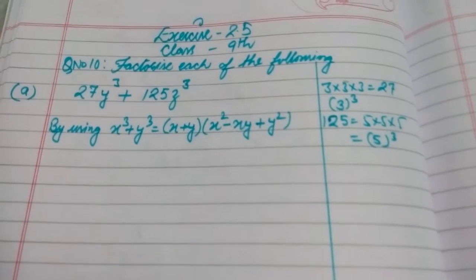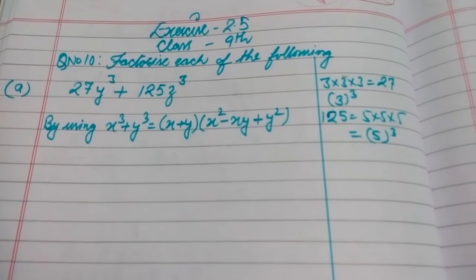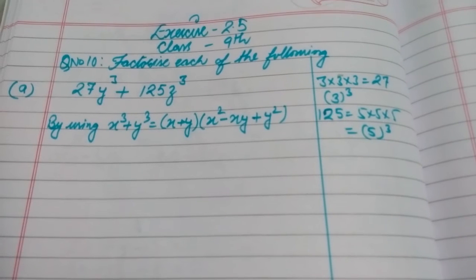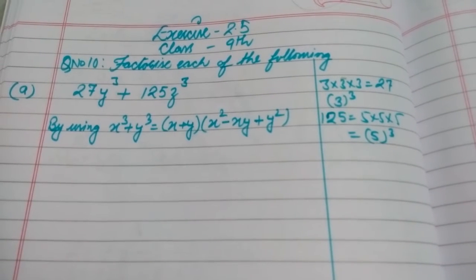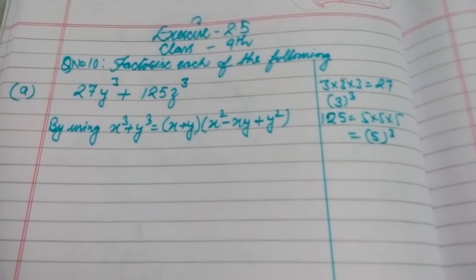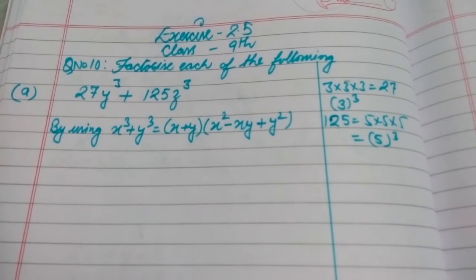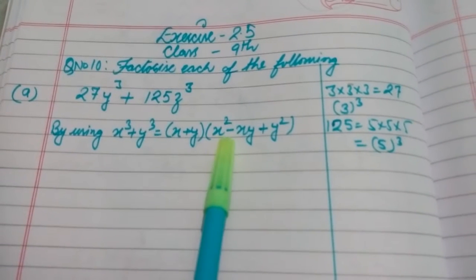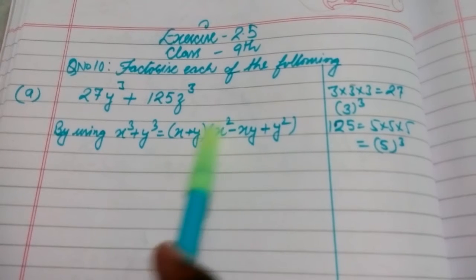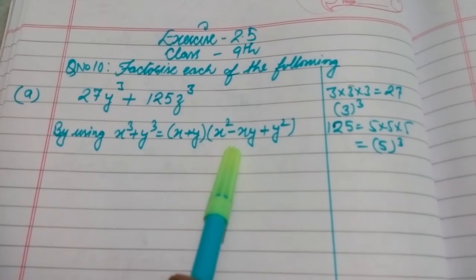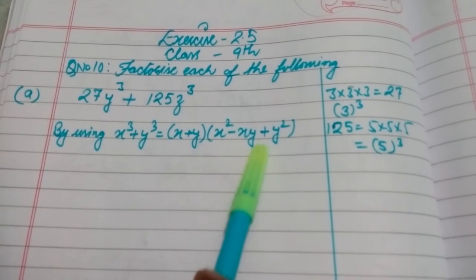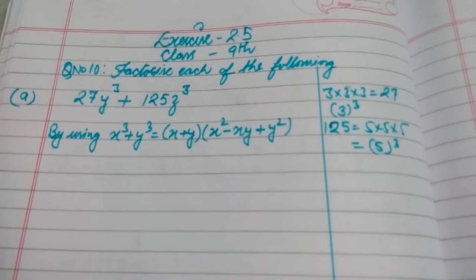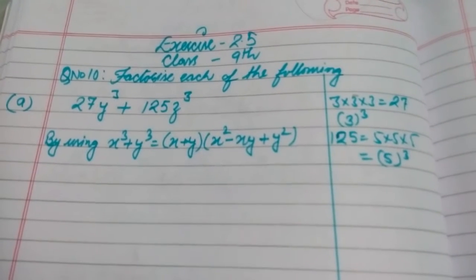Good morning. Let us continue our Exercise 2.5. Today we are going to solve question number 10, which says: factorize each of the following. We have already verified the identity in question number 9 that x³ + y³ = (x + y)(x² - xy + y²). We are going to use this identity from question 9 to solve question 10.